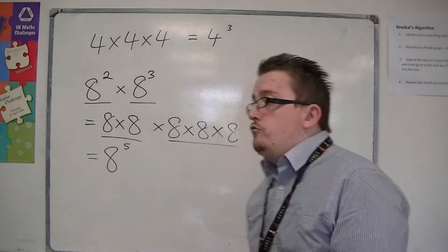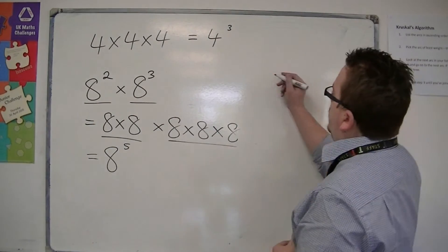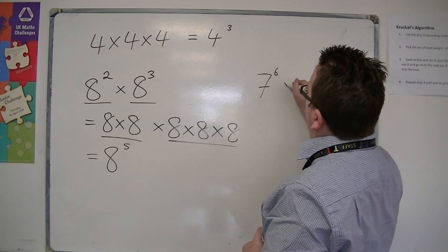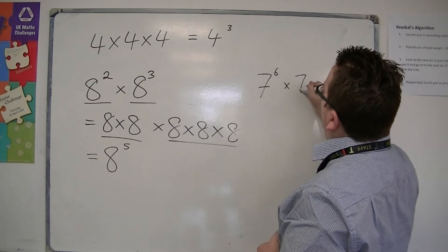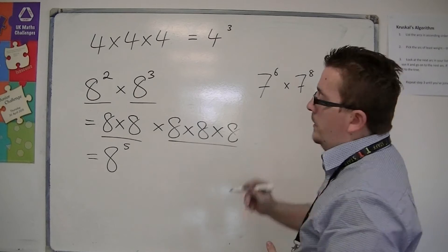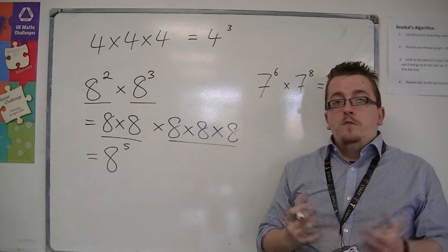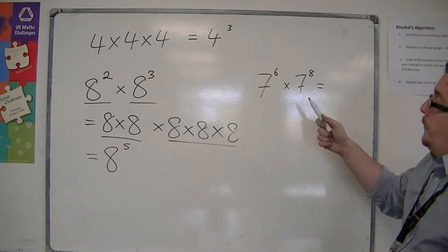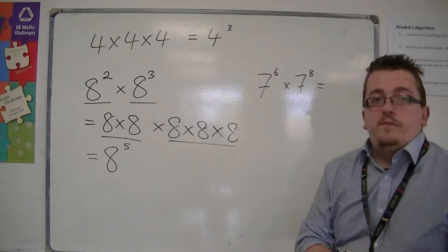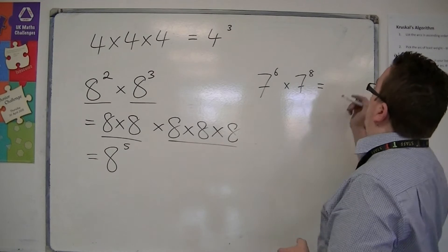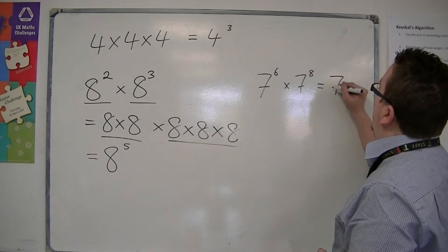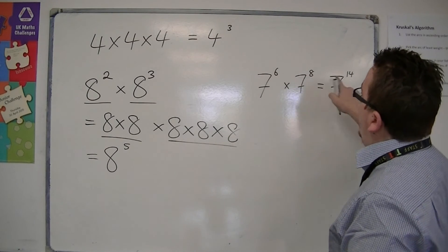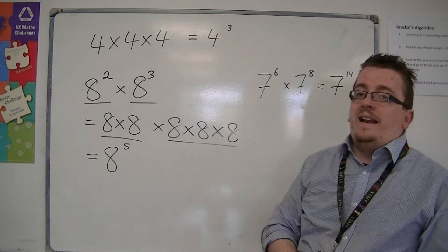So if I wrote down something like 7 to the 6 times 7 to the 8, I'm not going to write down 6 sevens followed by 8 sevens, but this would be 7 to the 14. So the powers get added together.